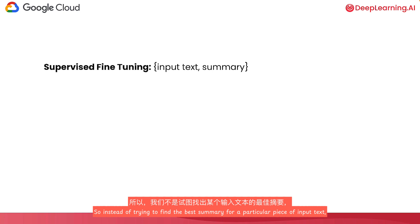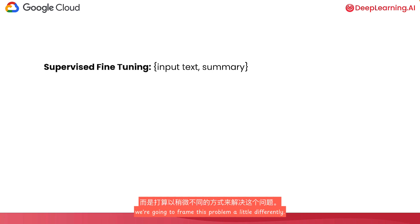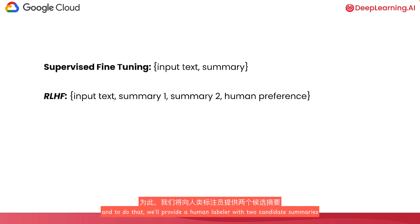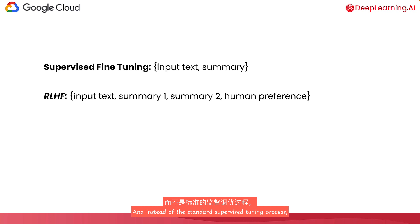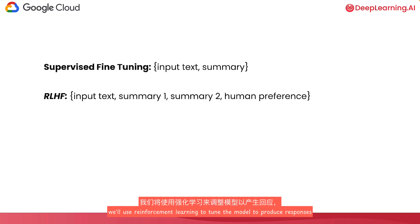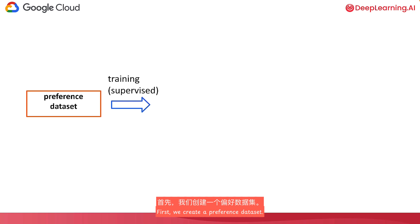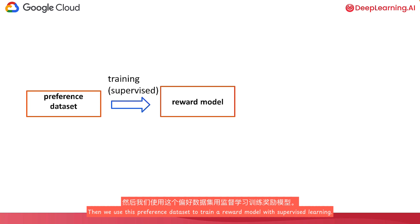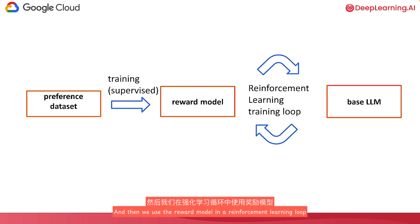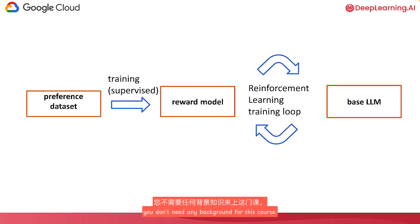So instead of trying to find the best summary for a particular piece of input text, we're going to frame this problem a little differently. We're going to gather information on human preferences. To do that, we'll provide a human labeler with two candidate summaries and ask the labeler to pick which one they prefer. And instead of the standard supervised tuning process where we tune the model to map an input to a single correct answer, we'll use reinforcement learning to tune the model to produce responses that are aligned with human preferences. RLHF consists of three stages: first we create a preference dataset, then we use this preference dataset to train a reward model with supervised learning, and then we use the reward model in a reinforcement learning loop to fine tune our base large language model. Don't worry if you're totally new to reinforcement learning — you don't need any background for this course.